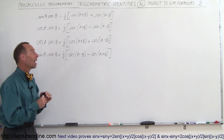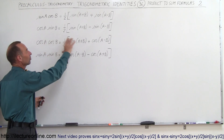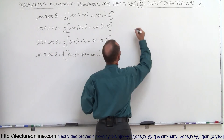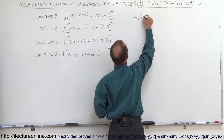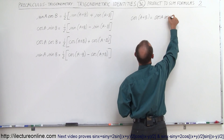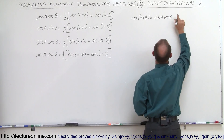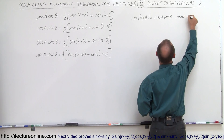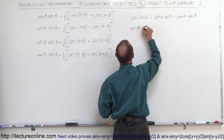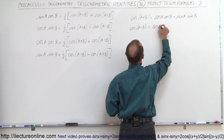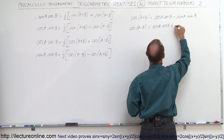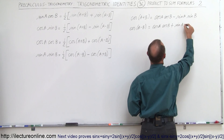Welcome to I'd like to turn online. We're going to show you how to get the next two product-to-sum conversions, or product-to-sum formulas. For that we're going to use the following two identities: the cosine of A plus B equals cosine A times cosine B minus sine A sine B, and the cosine of A minus B equals cosine A times cosine B plus sine A times sine B.